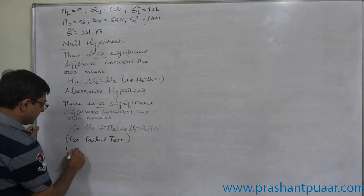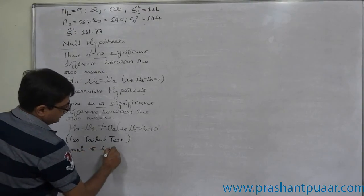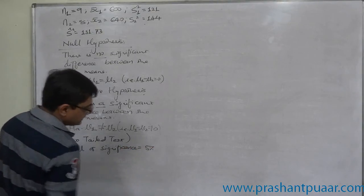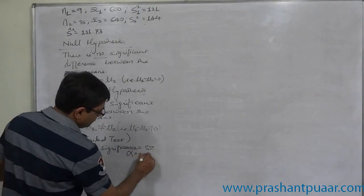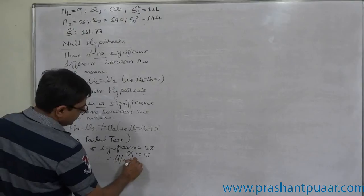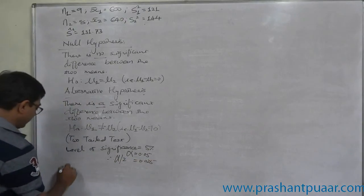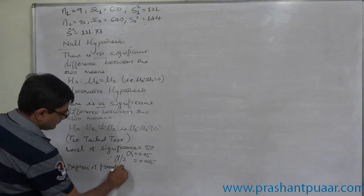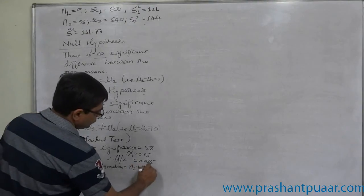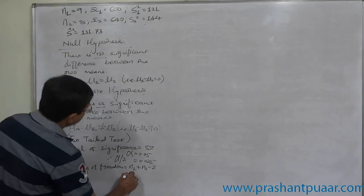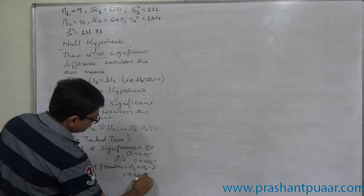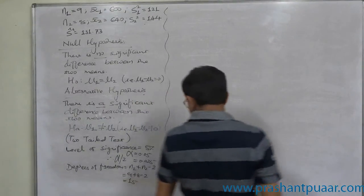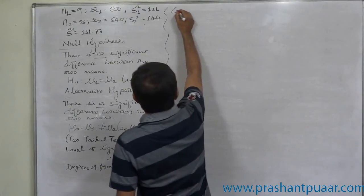Level of significance: Since there is no specific information about the level of significance in the question, we are going to take it as 5%. So α = 0.05, and two-tailed test α/2 = 0.025. Degrees of freedom: n₁ + n₂ - 2, that means 9 + 8 - 2, it is 15. Now we have degrees of freedom as well as α/2, so now we can find critical value from the table.